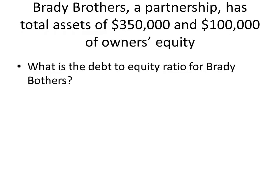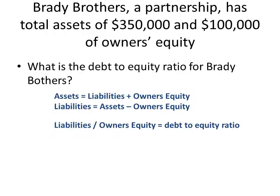Let's go through a couple of situations and see how we can figure them out and find them useful. In this case, we're talking about Brady's Brothers. They're a partnership. They have total assets of $350,000 and $100,000 of owner's equity. What's the debt to equity ratio for Brady's Brothers? We know that the equation is liabilities divided by owner's equity equals the debt to equity ratio. We know our assets and we know our owner's equity, but we don't know the liability.